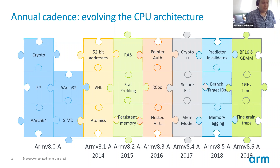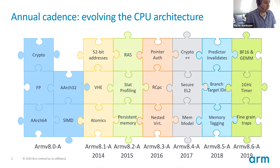A little bit of history before we jump into this year's extensions. Since the introduction of ARMv8 quite a few years ago now, we've maintained an annual .x extension which we bring out every year, and the idea of this is to continue evolving the architecture. As we get used in more markets, as computing itself evolves, we find new problems and new things we want to tackle, and so new features we want to put into the architecture.